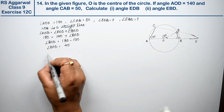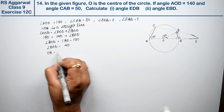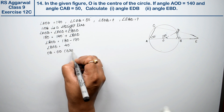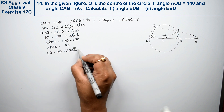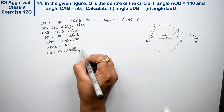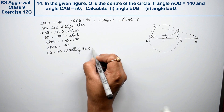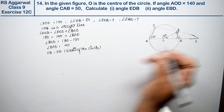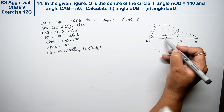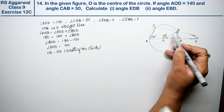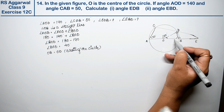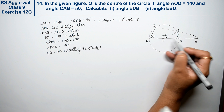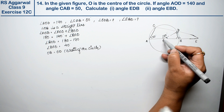So angle BOD = 40 degrees. Now, OB and OD are both radii of the circle, so OB = OD. Since two sides of triangle BOD are equal, the opposite angles are also equal.